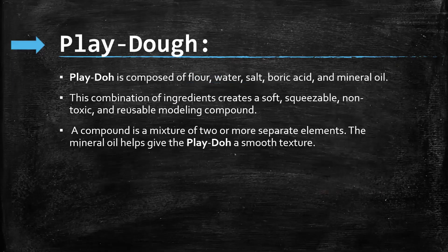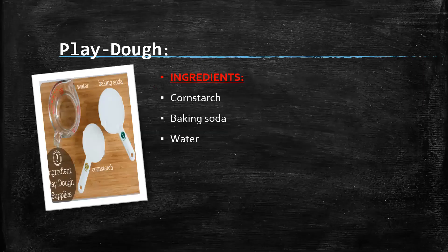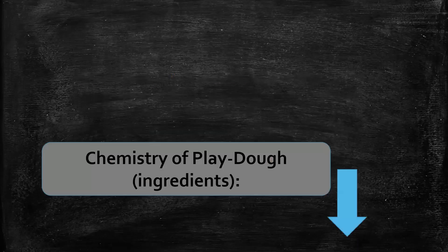The third topic is play-doh. Play-doh is composed of flour, water, salt, boric acid, and mineral oil. This combination of ingredients creates a soft, squeezable, non-toxic, and moldable compound. A compound is a mixture of two or more separate elements. The mineral oil helps give play-doh a smooth texture. The ingredients used in play-doh include cornstarch, baking soda, and water. Here we discuss the chemistry of the ingredients used in play-doh.